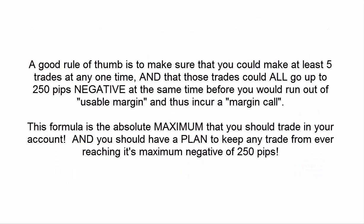A good rule of thumb is to make sure that you can make at least five trades at any one time and that all of those trades could go up to 250 pips negative before you would run out of usable margin and incur a margin call. I'm not saying you should ever allow your account to margin call or allow any one trade to go 250 pips negative before closing it. All I'm saying is that when you leave that much cushion on every trade, it gives you the time to make a plan on what to do with trades that are going seriously underwater.